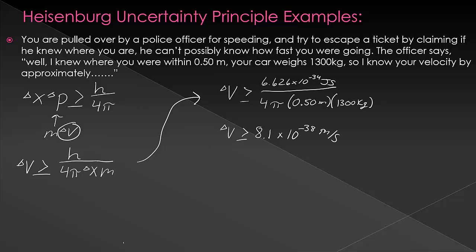So given that this is an incredibly small value in comparison to your actual speed and that the difference in magnitude isn't going to make any difference in your ticket. A ticket of going 20 miles over the speed limit is the same as going 20 plus 8.1 times 10 to the negative 38 meters per second over the speed limit.